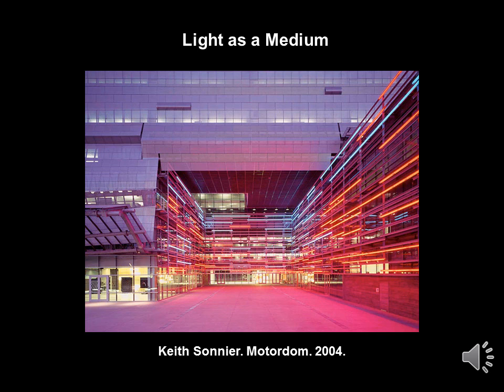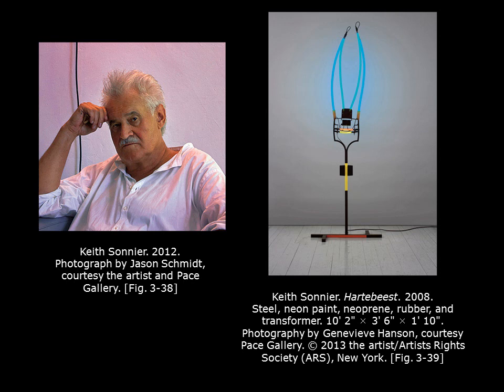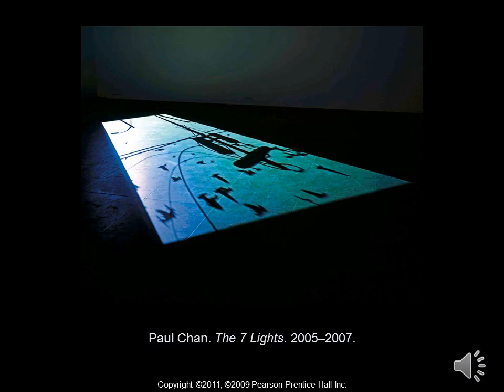This is a light installation titled Motordom by Keith Sonnier from 2004 and it is an example of light as a medium. These neon tubes flicker on and off approximately every five minutes to give the impression as if taillights are driving by. This effect is probably seen more when we look at images of cars taken with photographs, but it's the same effect. You can read more about Keith Sonnier and his work in the forming art section of chapter three in your text.